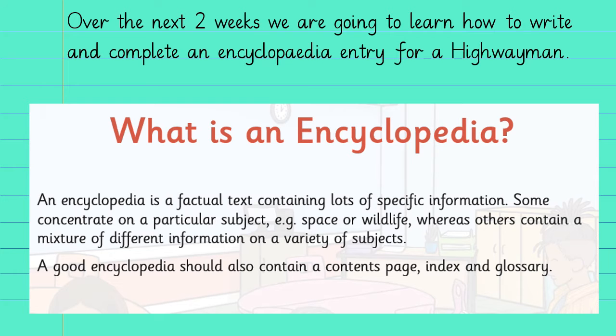Over the next two weeks we're going to learn how to write and complete an encyclopaedia entry for a highwayman. An encyclopaedia is a factual text containing lots of specific information. Some concentrate on a particular subject, for example space or wildlife, whereas others contain a mixture of different information on a variety of subjects. A good encyclopaedia should also contain a contents page, an index and a glossary.